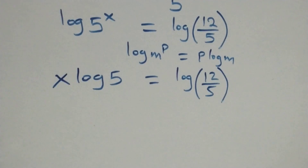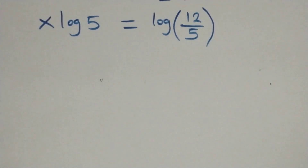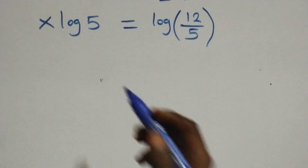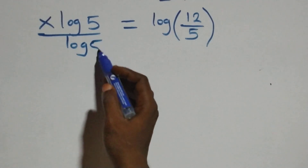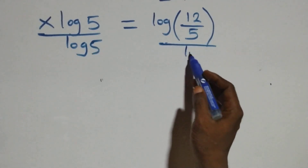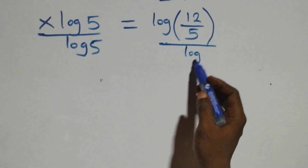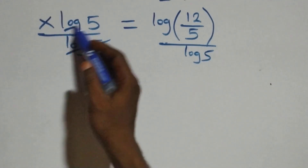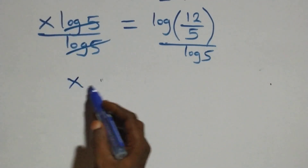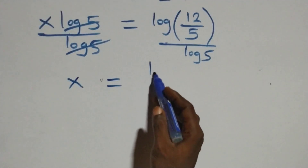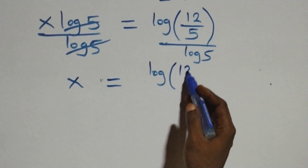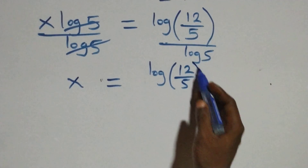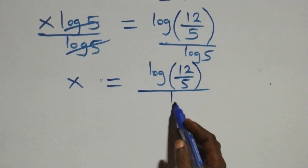The next step: we divide both sides by log 5 — divide this side by log 5, also divide this side by log 5. Log 5 cancels each other, and we have x left, which is equal to log(12/5) divided by log 5.